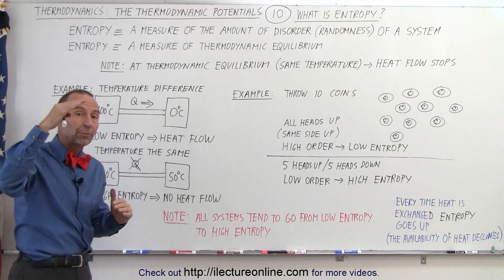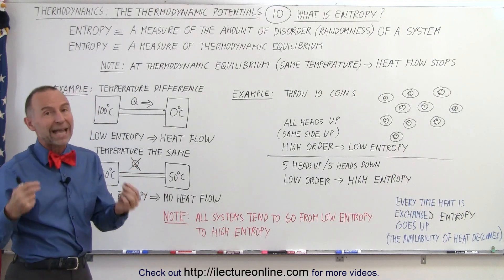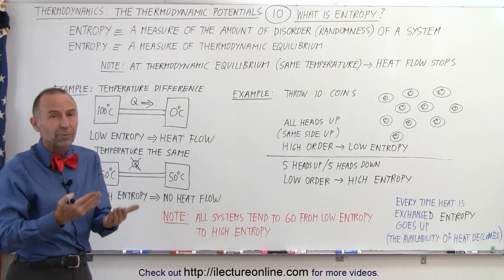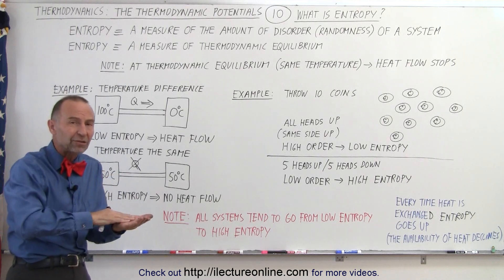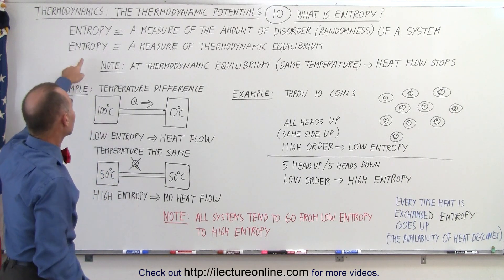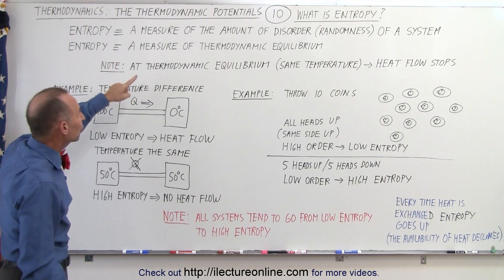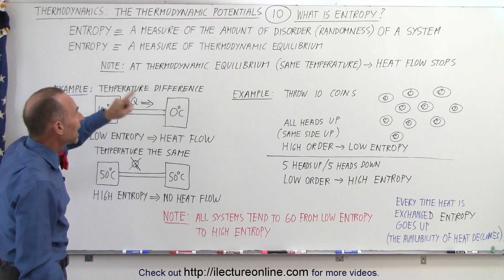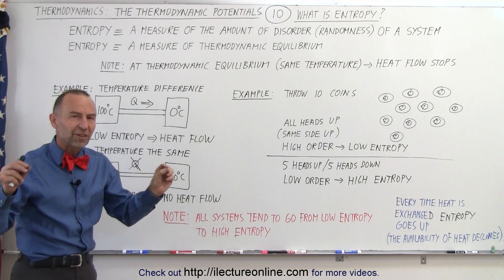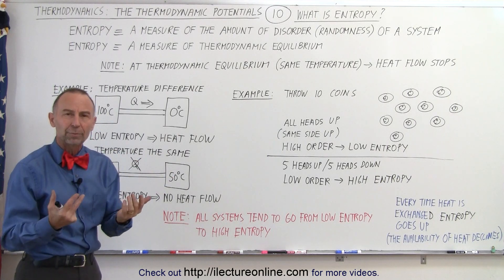Increased order means entropy goes down, which is not normally a natural process. All processes, all systems tend to go from an ordered state to a disordered state. The second definition: entropy can be defined as a measure of the thermodynamic equilibrium. The more a system is at equilibrium, the higher the entropy.